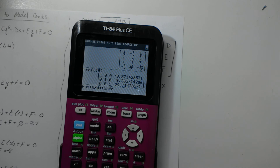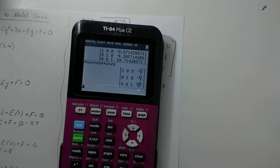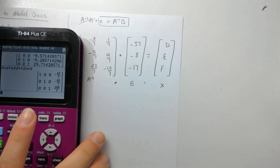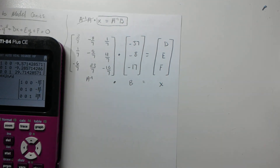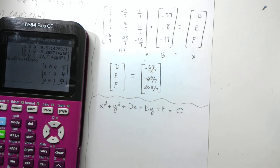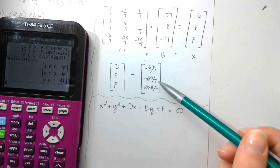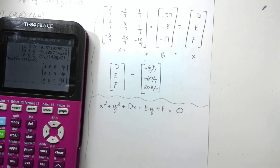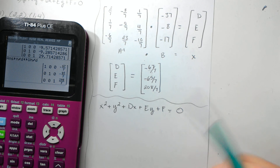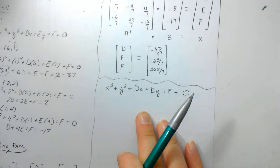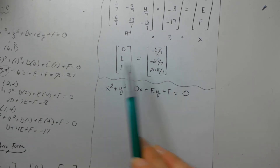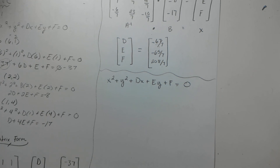Of course it comes out in decimals, so we need to convert to fractions. This gives you our answer for X. I'll transcribe that: your D value is negative 67 over 7, and your E and F all line up — I just pulled them from the last column. I also pulled down our starting formula, because now you're going to take all these values and substitute them back in.